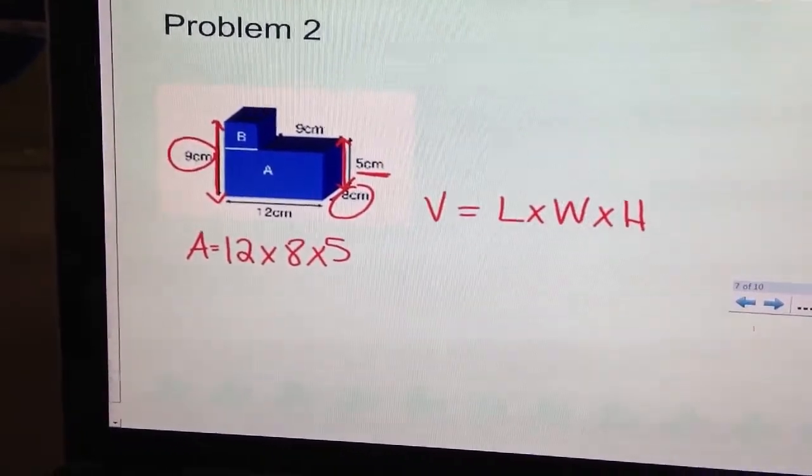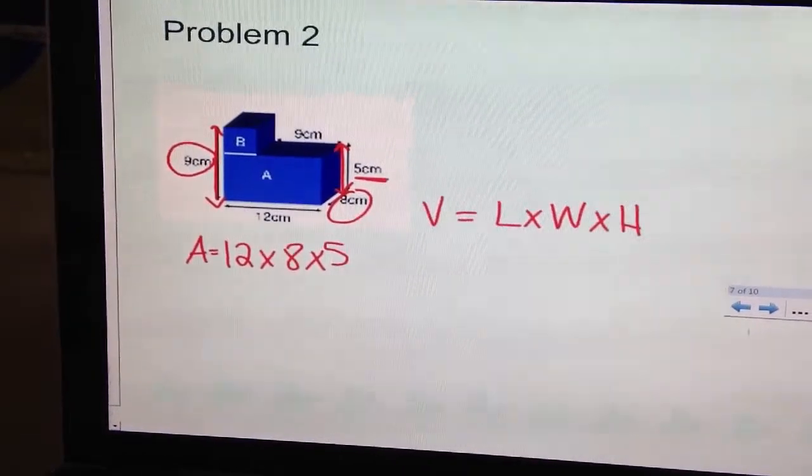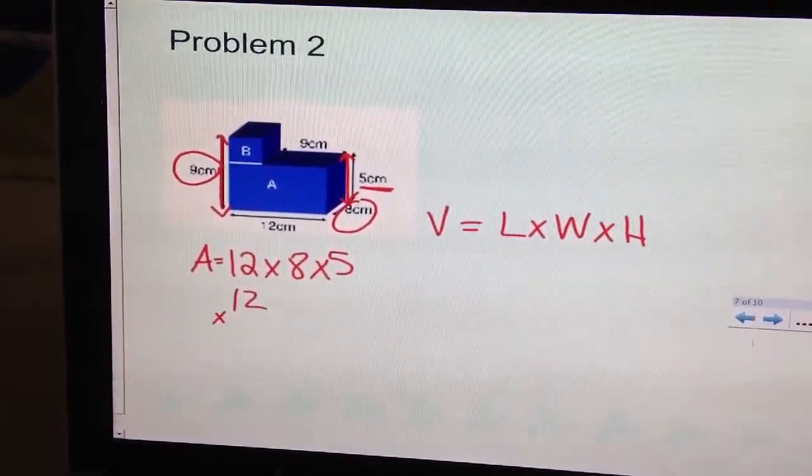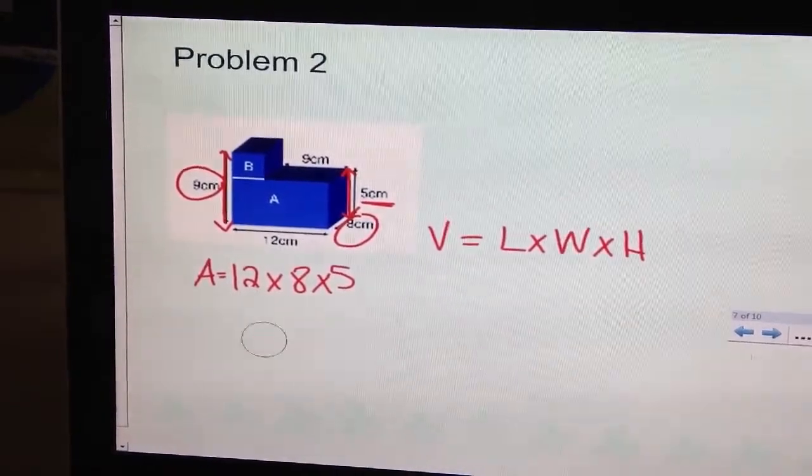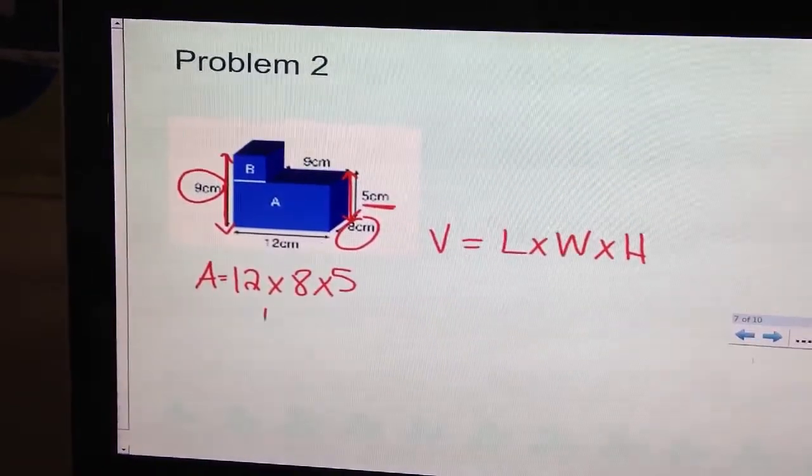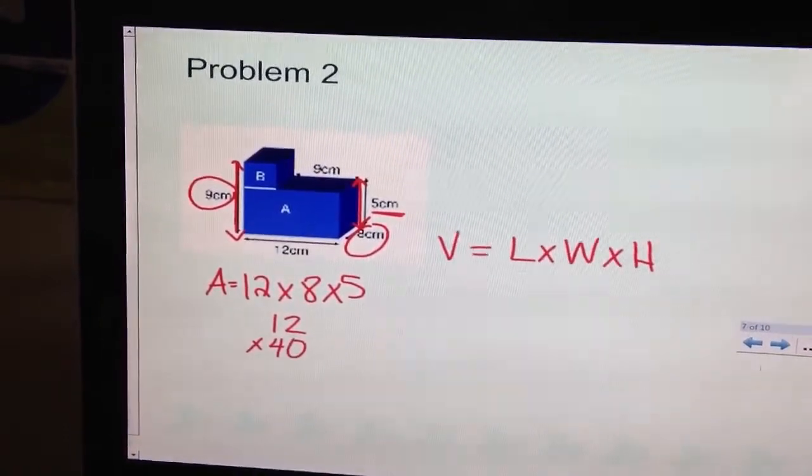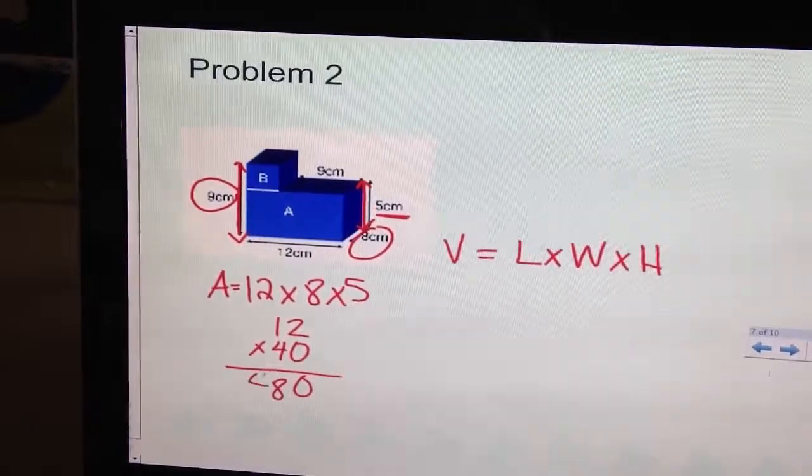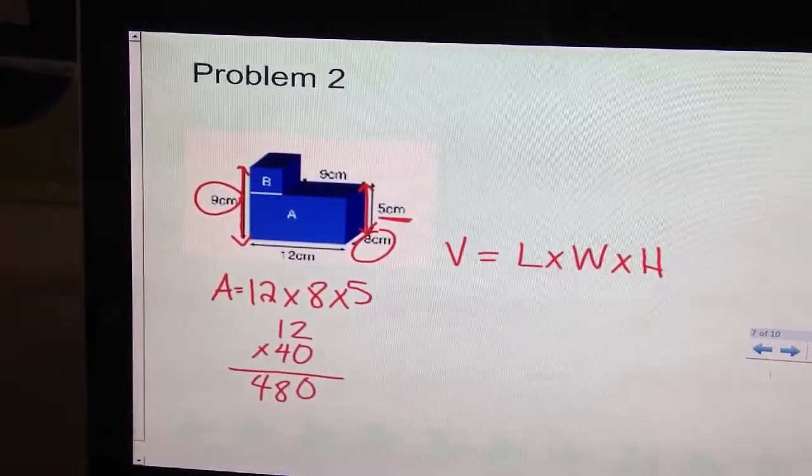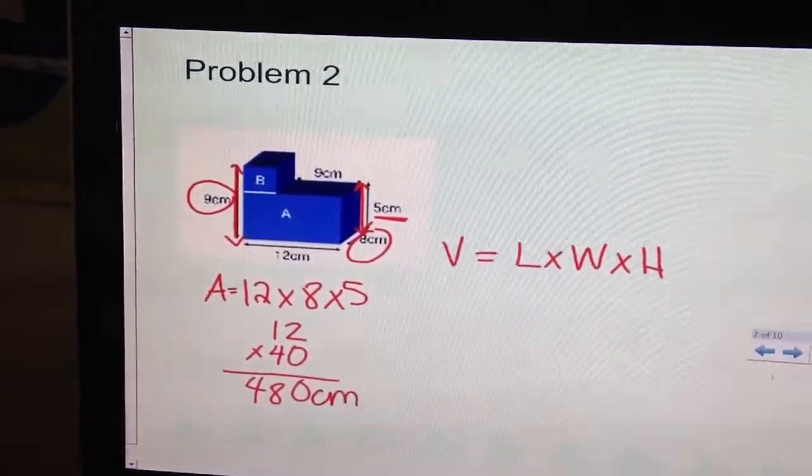So I have 12 times 8 times 5. So what I would do is I would multiply that together. 8 times 5 is 40. I'm actually going to do that first. And that will give me 12 times 40.